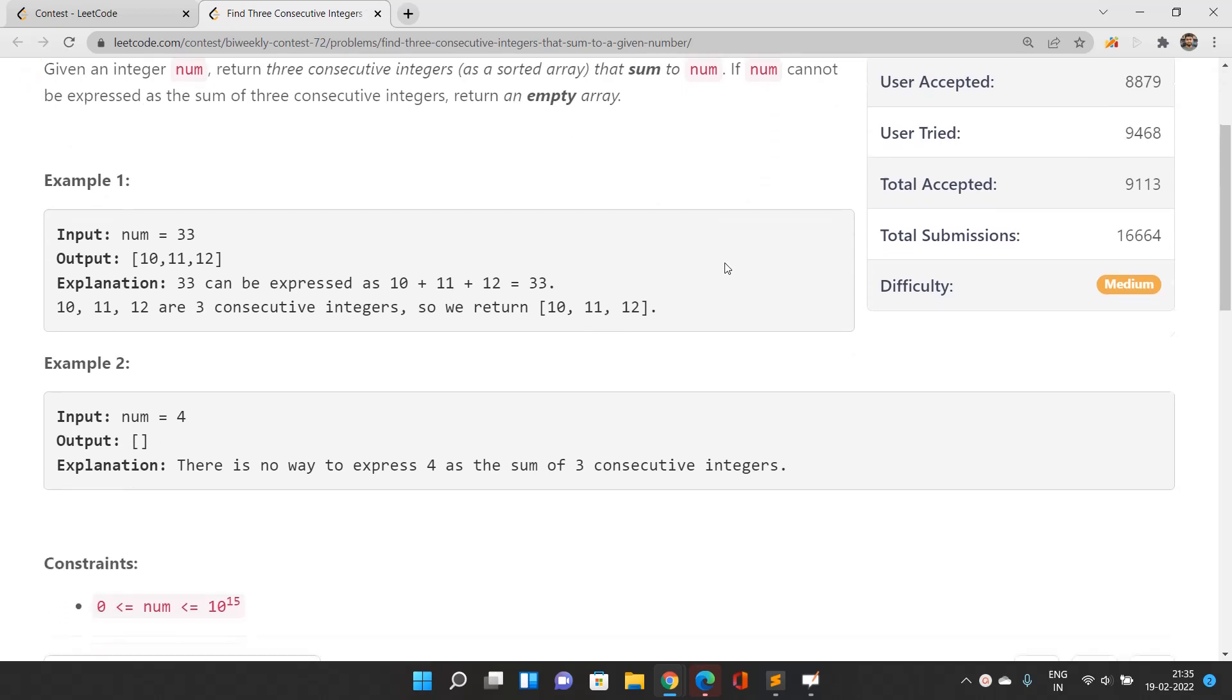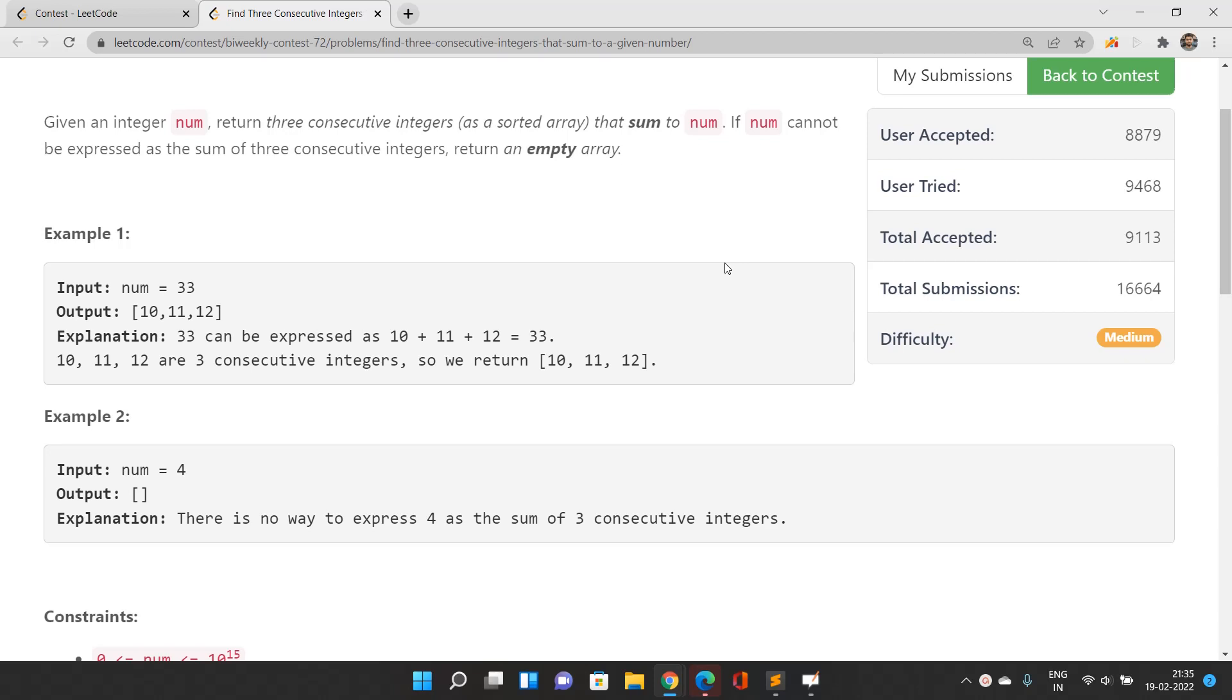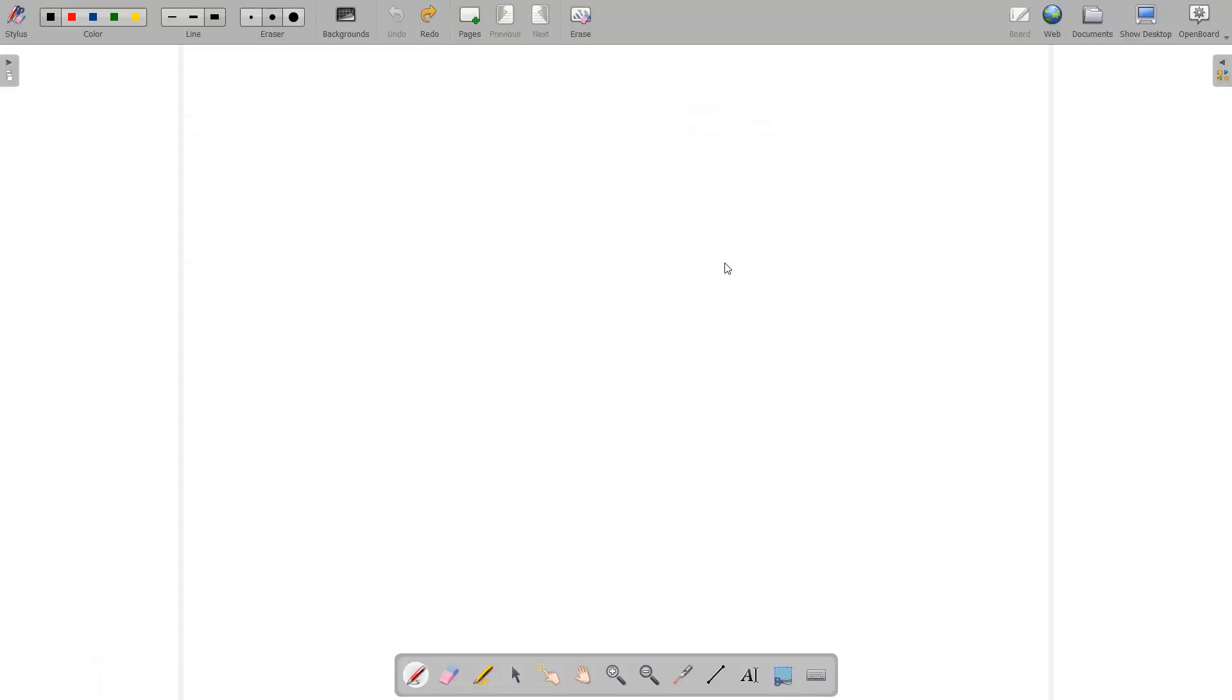Let's take an example and understand how this is going to happen. Let's say we have the target as 33. If you take 10, 11, and 12 as your sorted array, you can see the sum is actually coming out to 33, so this is a valid array.